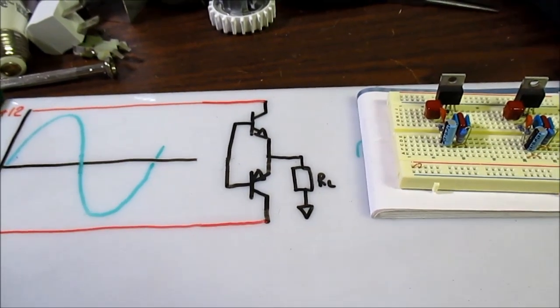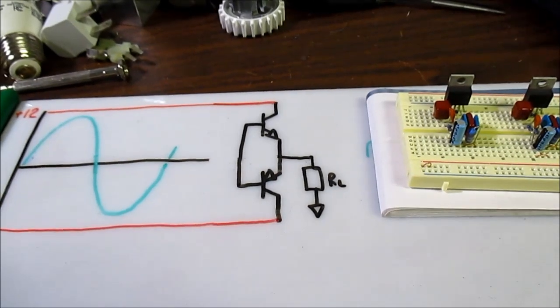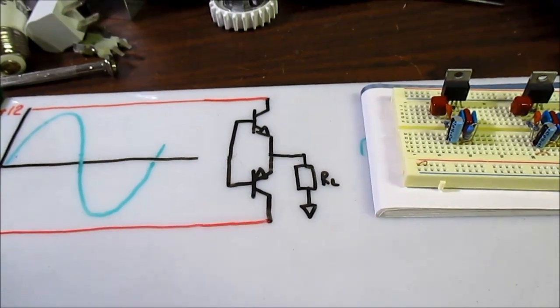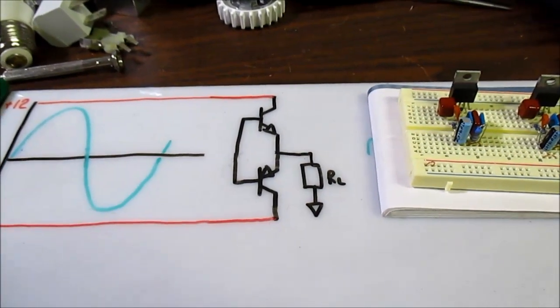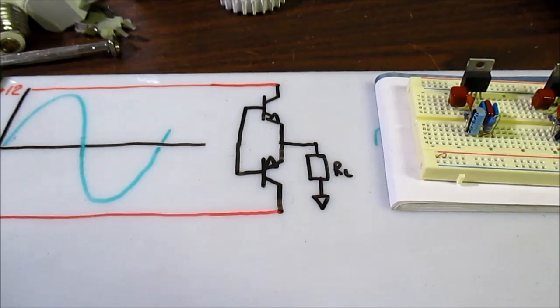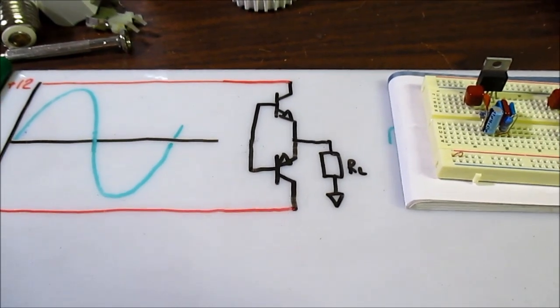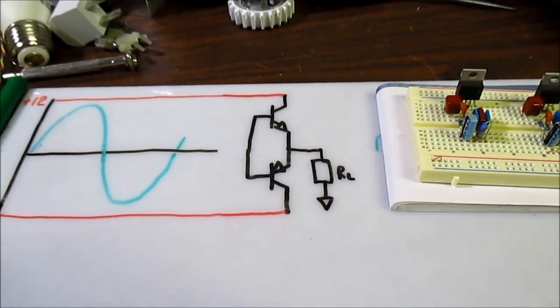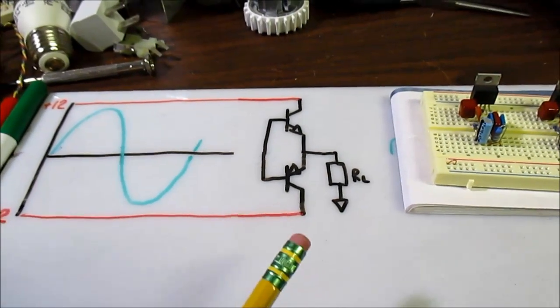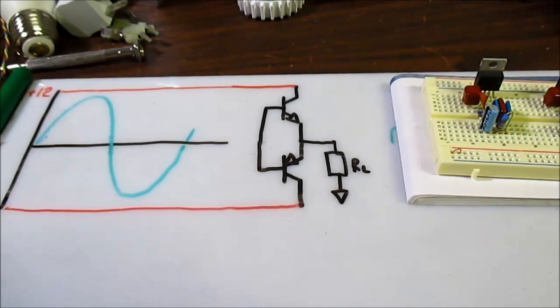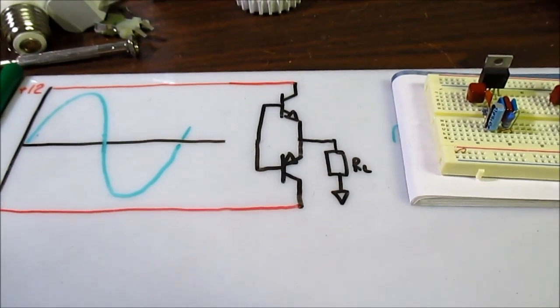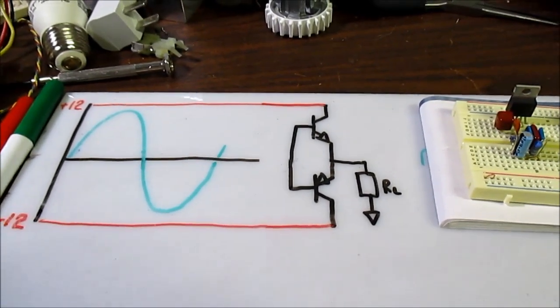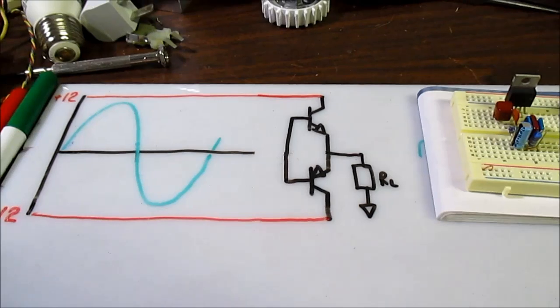I'll also do a follow-up video about paralleling amplifiers for more power. This mainly applies to chip amps, although it doesn't have to. It's something commonly done with chip amps to get more power out of them. Sometimes they bridge them right inside the same IC, which is often done with car stereo type IC amplifier output stages, and I'll explain how that's done.